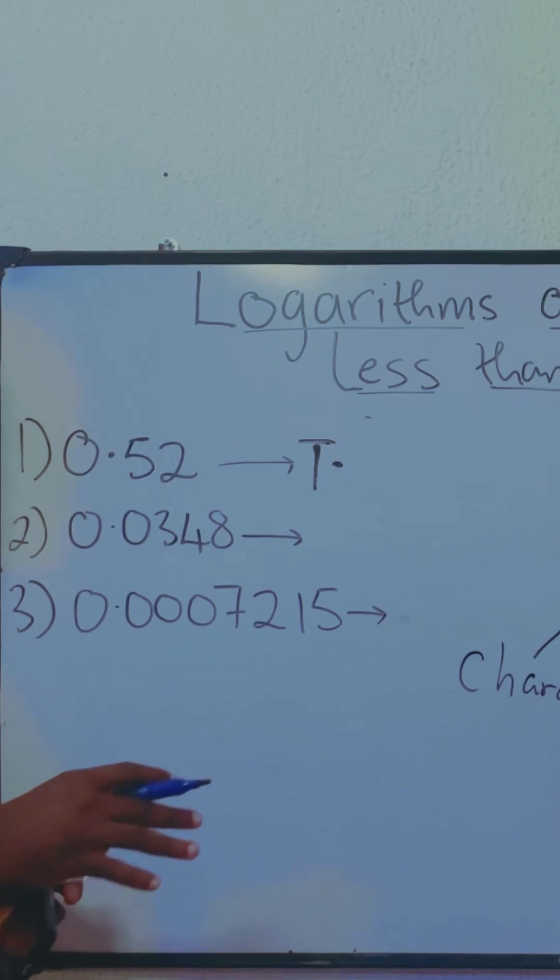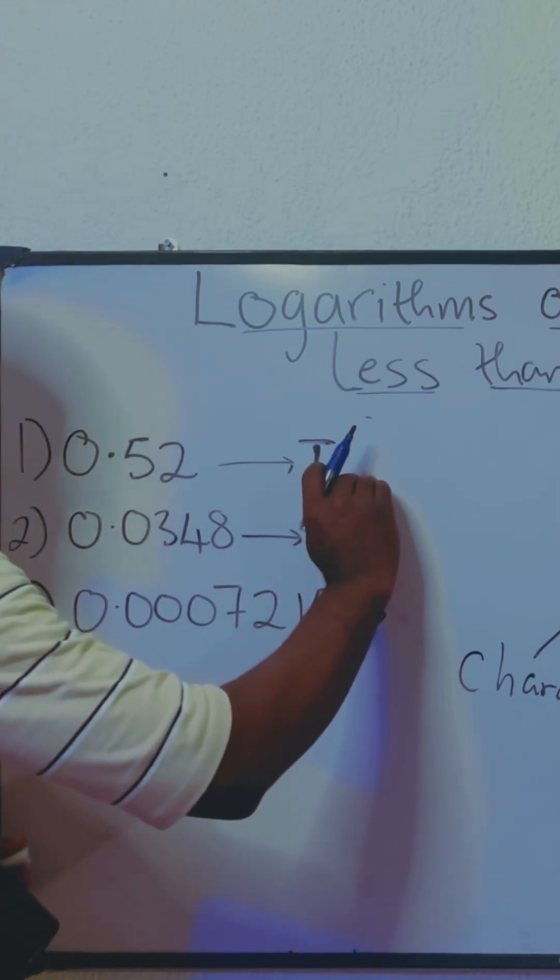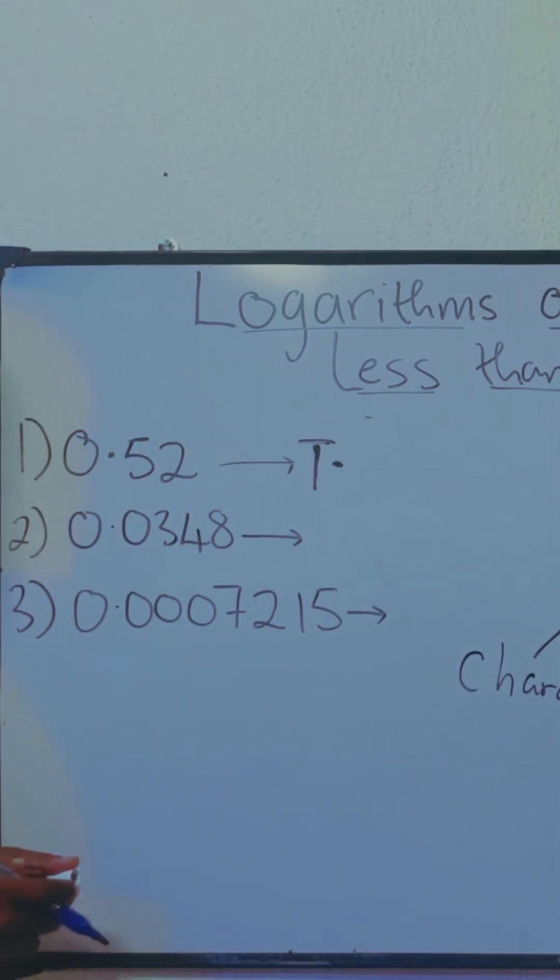So whatever you're going to get, you're going to indicate the fractional part of that logarithm, that is the mantissa.